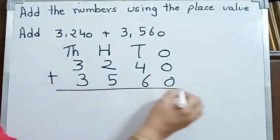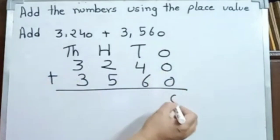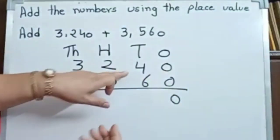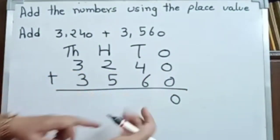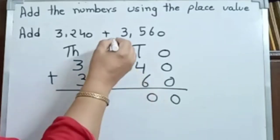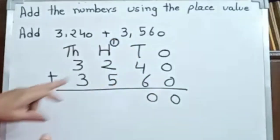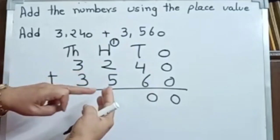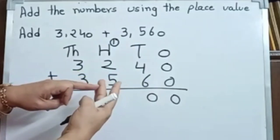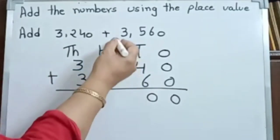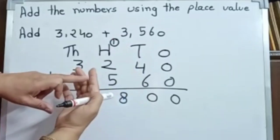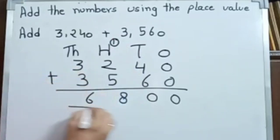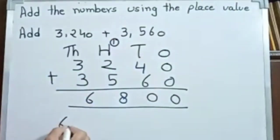Do you know how to add? 0 plus 0 is 0. Now count after 4: 5, 6, 7, 8, 9, 10. Zero here, one carry over. Now count after 2: 3, 4, 5, 6, 7 and 1 makes 8. Count after 3: 4, 5, 6. So the answer is 6,800.